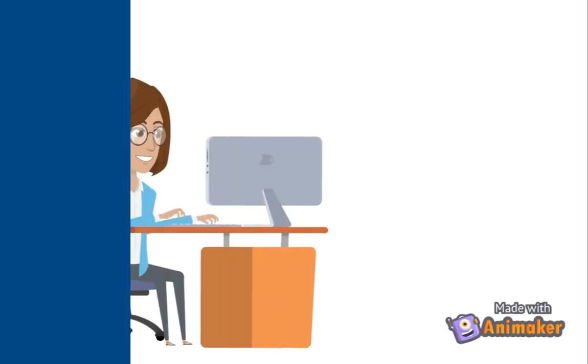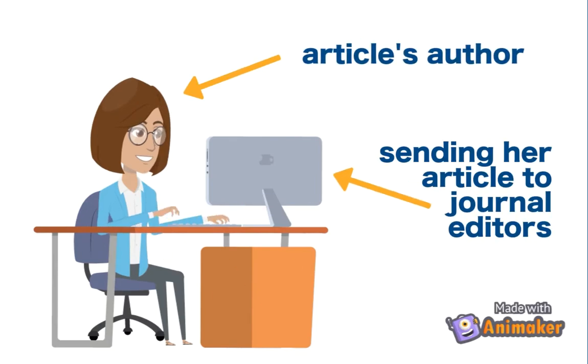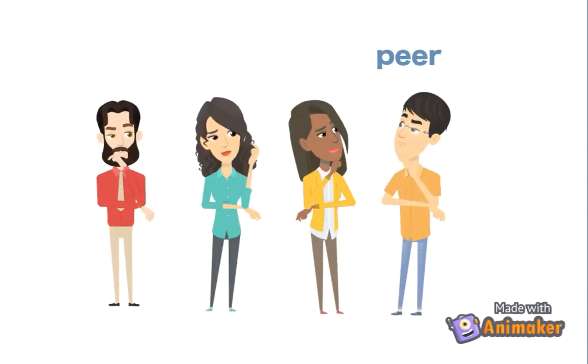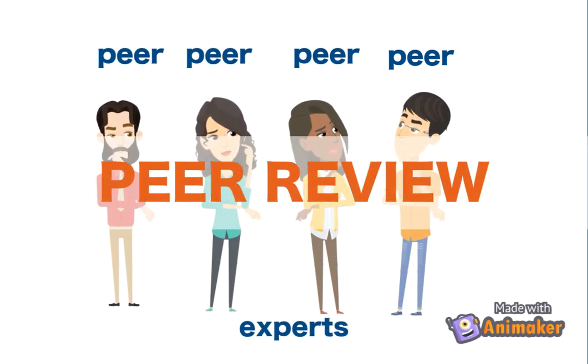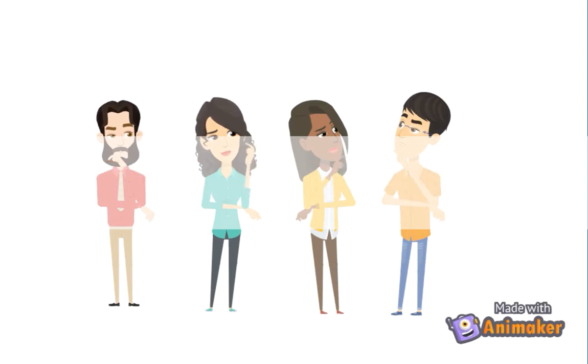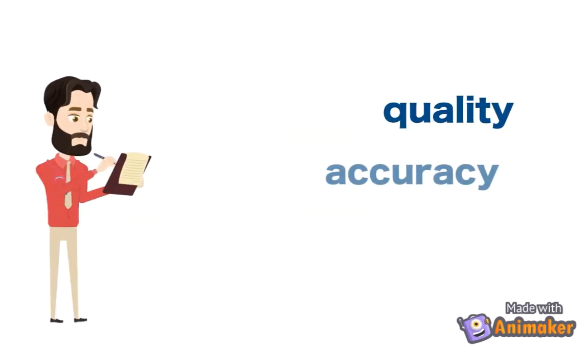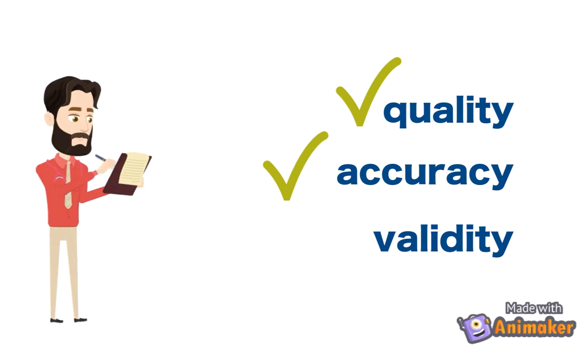The author of the article submits it to a journal for publication, and those journals' editors then forward the article to experts within the field of study. These experts are considered the author's peers, hence peer review. The review process checks for quality, accuracy, and validity of the research methodology and procedures presented in the article.